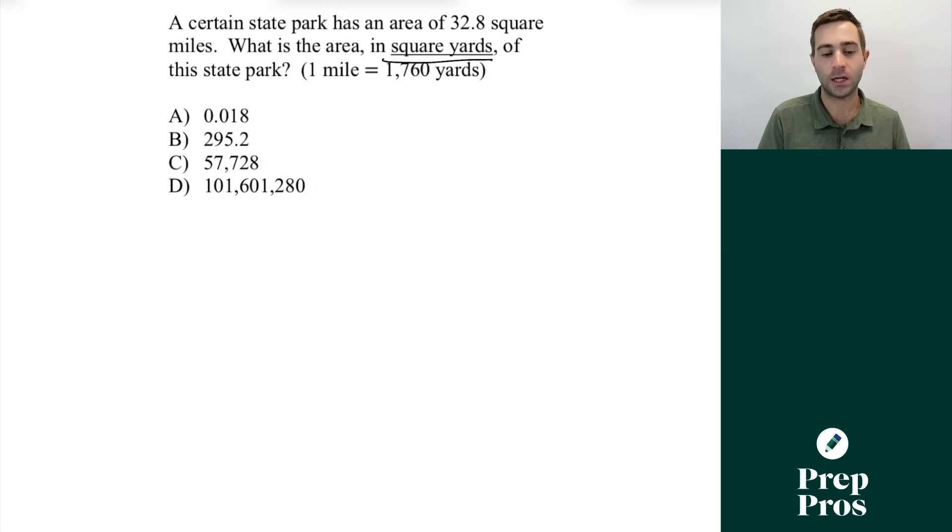Now, here we see a certain state park has an area of 32.8 square miles. What is the area in square yards of this state park? Now, the big mistake most students make is they'll do 32.8, and they'll do essentially just miles, and they'll put it over one. And then to use our conversion factor, one mile equals 1760 yards. They'll do 1760 yards over one mile, and it looks like their units are canceling out, and they end up getting the wrong answer here.